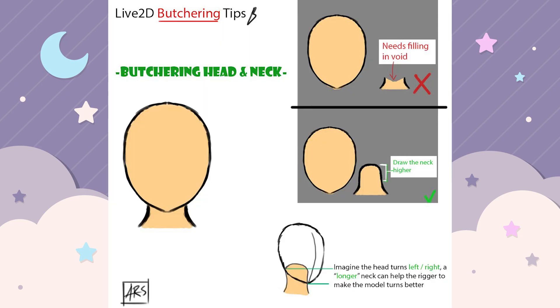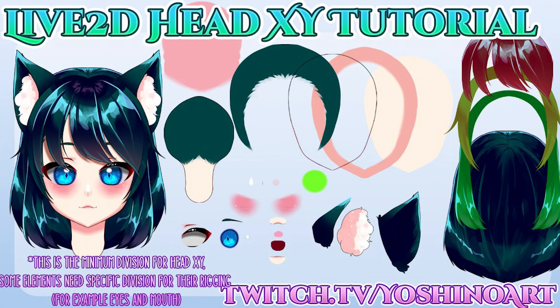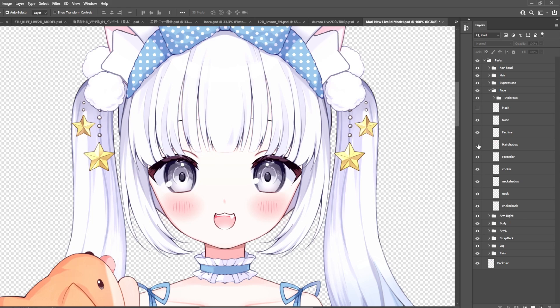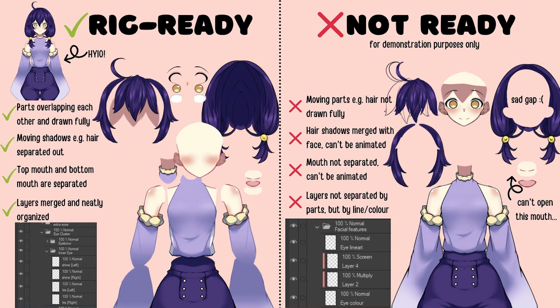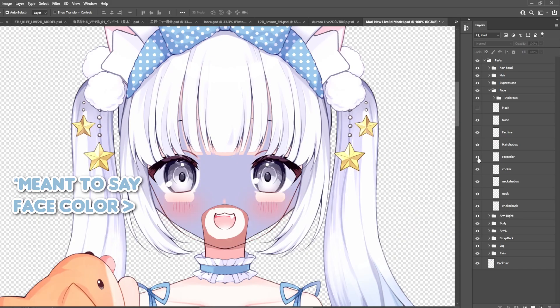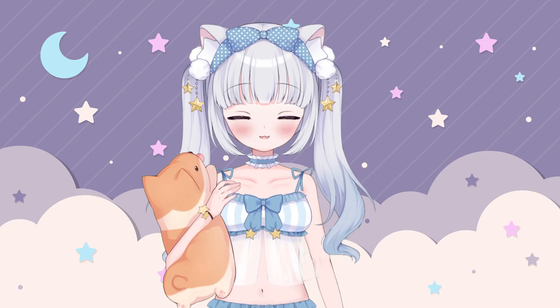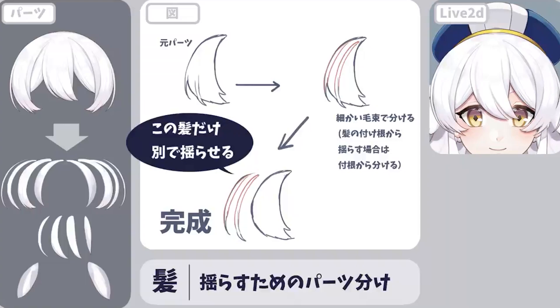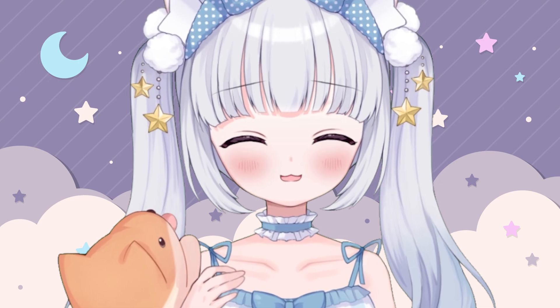Most of these don't have to be separated any further unless you want to. For example, the nose, the front hair, and the face can all be on their own whole layer for a simpler rig. But if you want something more complex, you can separate the face layer into the hair shadow, hair color, and face line art. The nose can be separated into the line art, the shadow, and the highlight. The front hair can be separated further into the middle, the left, and the right part. Separating it this way can allow you to create an almost 3D effect when rigging.